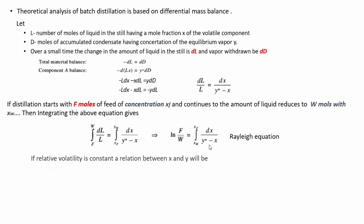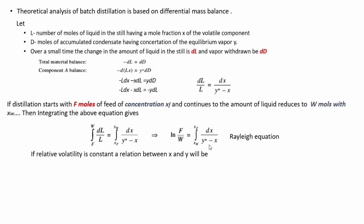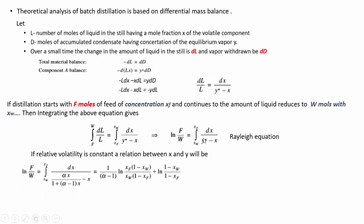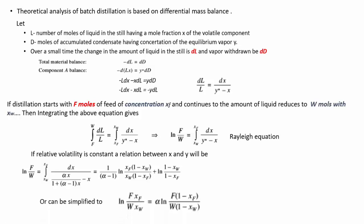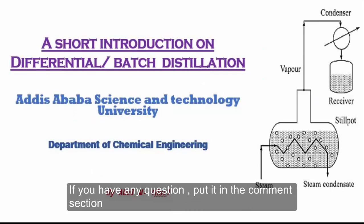If you don't have xy data but the relative volatility α is given and constant, then y* is related to x by: y* = αx / [1 + (α - 1)x]. You can substitute this into the Rayleigh equation and simplify to get the general equation for batch distillation without reflux. For distillation with reflux — whether constant or varying reflux ratio — there are separate calculation scenarios, which we will cover next time.